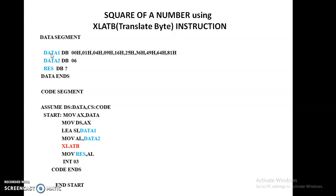Coming to the data segment part, here I have declared three variables named data1, data2, and result. data1 is of type byte and it is a one-dimensional array. This data1 is used to store the squares of numbers starting from 0 to 9 — that means 0 squared, 1 squared, 2 squared, 3 squared, and so on. data2 is also of type byte, and I want to find out the square of the number 6, so data2 is declared for that. I want to explicitly store the square in another variable called result, which is also of type byte. With these three variables, my data segment part is completed.